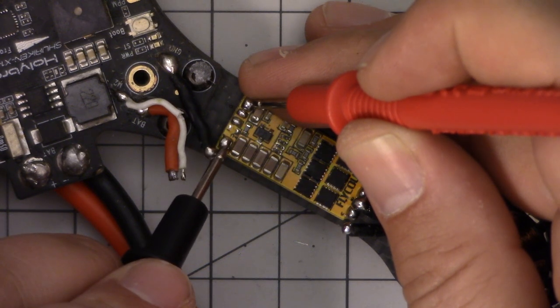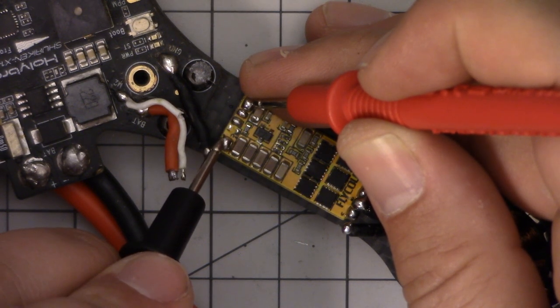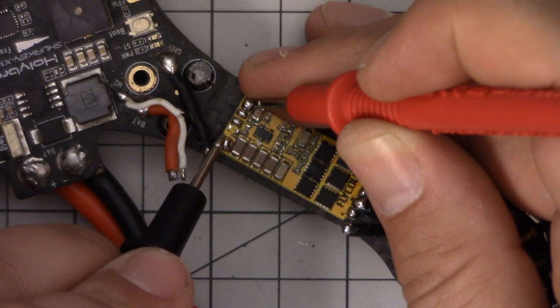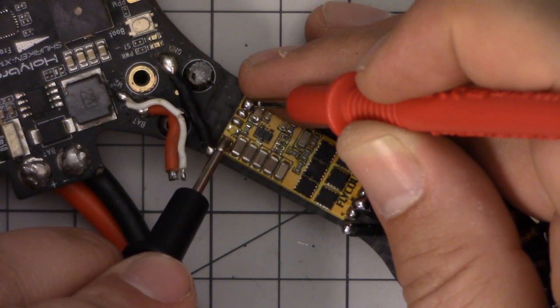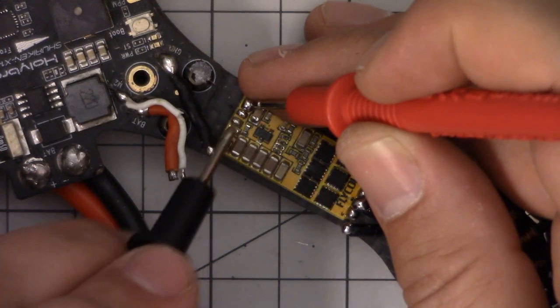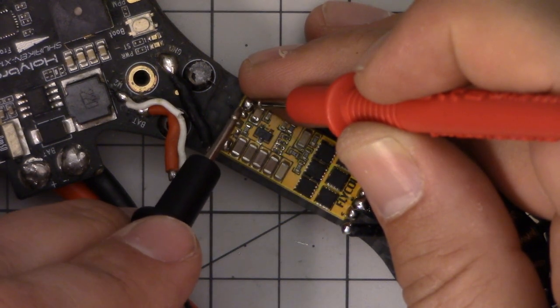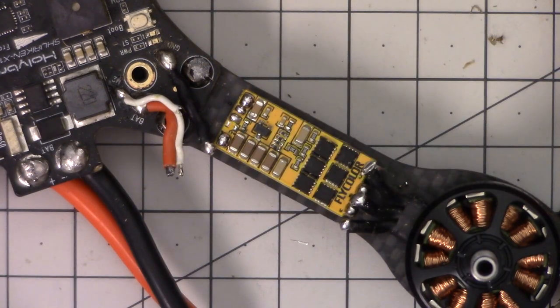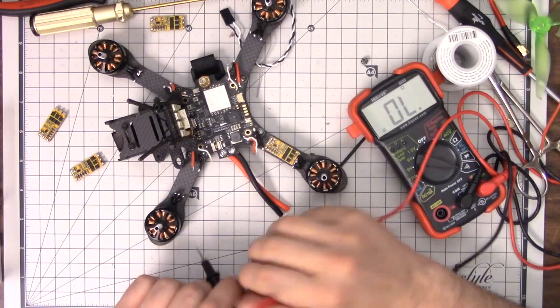If you ever test an ESC and you have continuity between the main positive and negative terminals, then the ESC is dead, it's no good. There you go, I can see now that these two are ground because they have continuity and that's the only thing on the ESC that's going to have continuity like that.